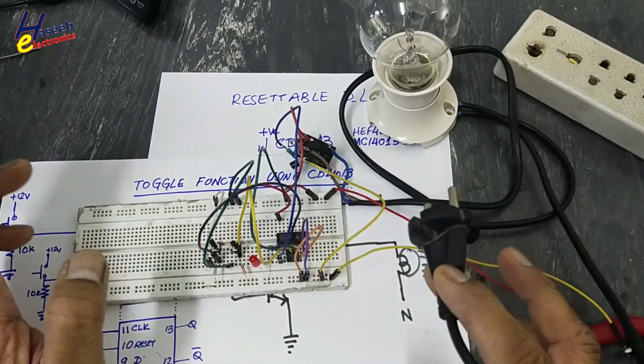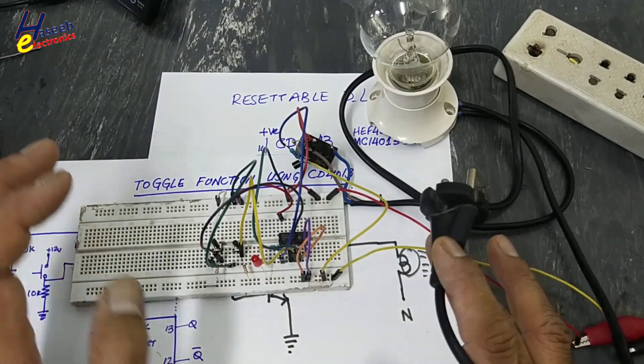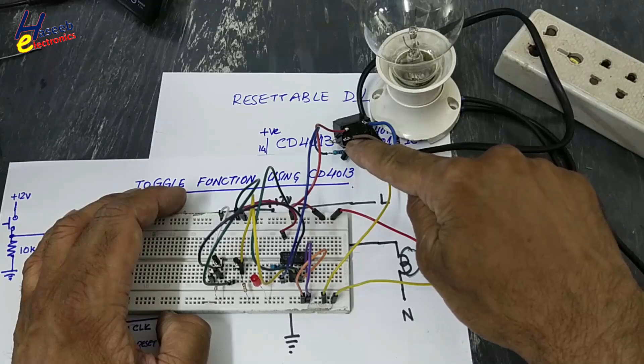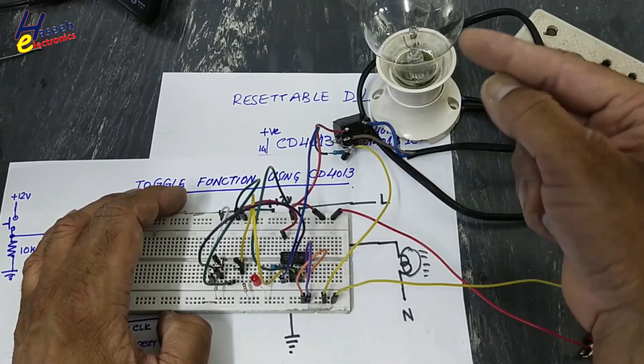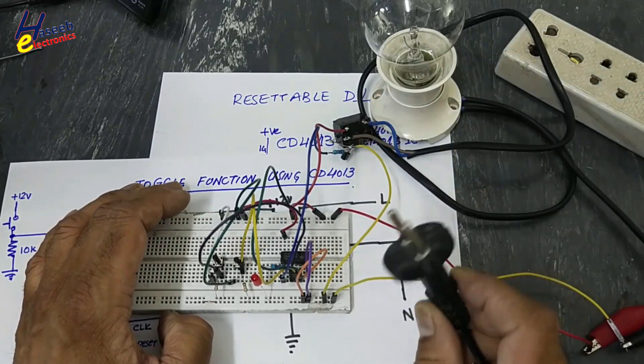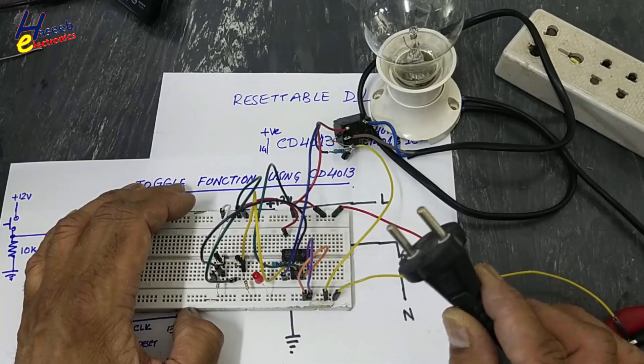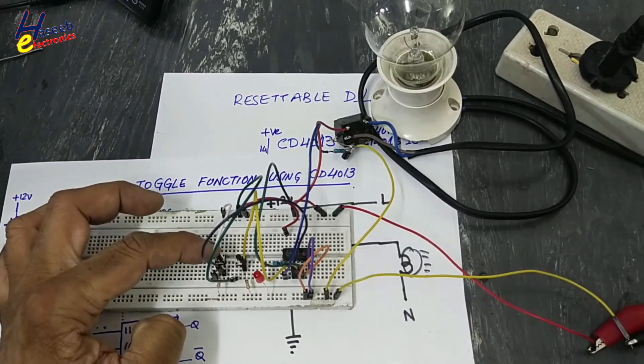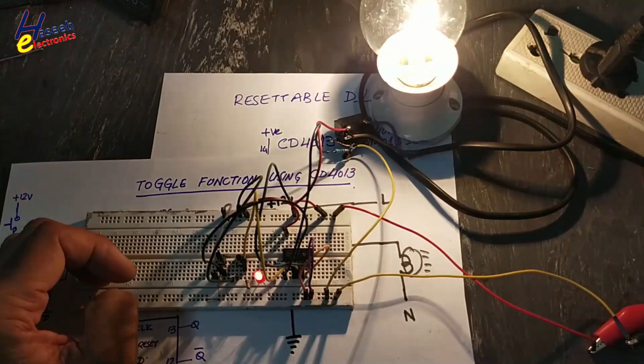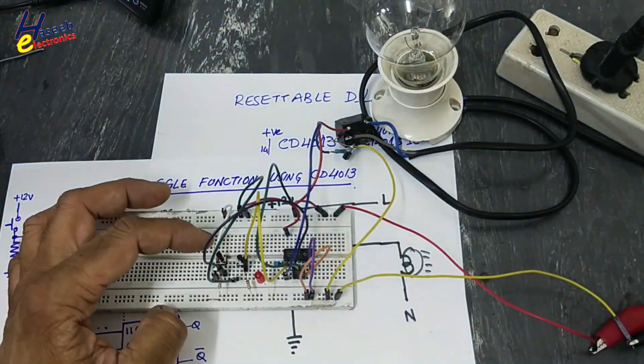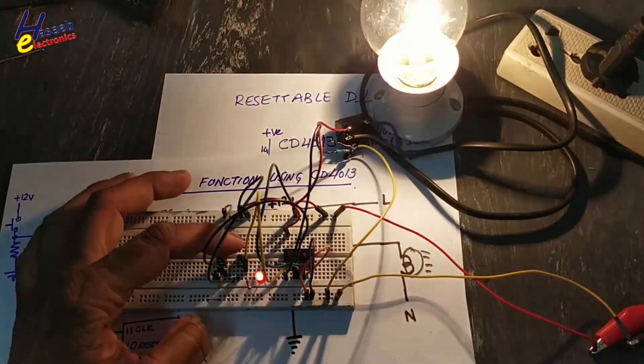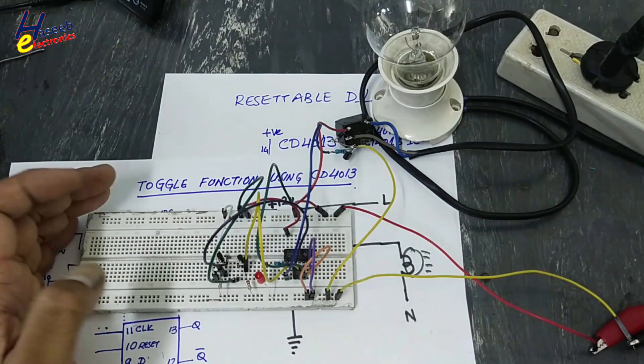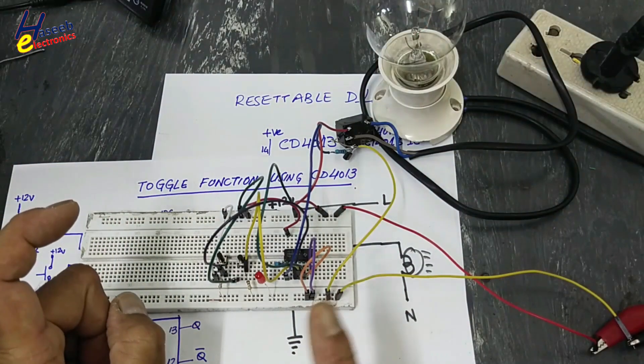Now our circuit is ready. I will connect this circuit to the line socket. These two wires, common and this point, will be exposed to line voltage. Take special care for safety. On, off, on, off.